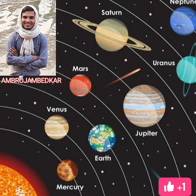Planets are opaque bodies which continuously revolve around and are lighted by the sun. There are eight planets in the solar system. A ninth planet has been recently discovered by NASA, the space organization of the USA.